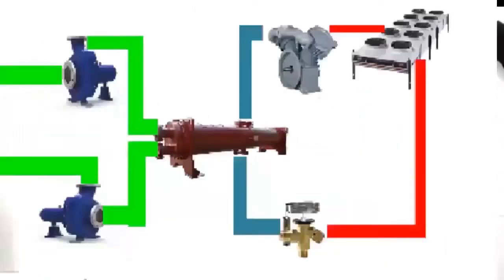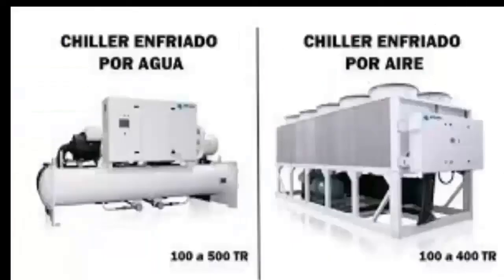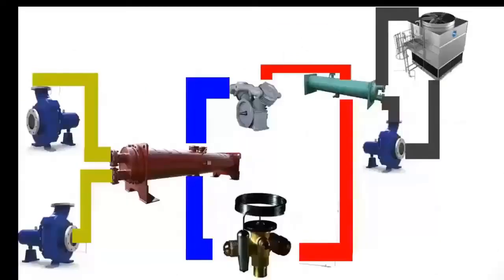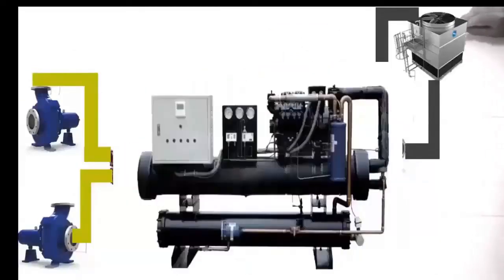In class number 1 we showed that the chiller's condenser at that time was cooled by fans — so we were talking about an air-cooled chiller. A chiller that has a fan in its condenser is called an air-cooled chiller. In this class number 2 of our beginner chiller course, we are going to show a condenser cooled not by air, but by water.